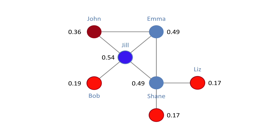In this eigenvector centrality analysis, Jill is again an important player because Jill is very central and also connected to other central people. We see that Emma and Shane are important, but for a different reason — they're important because they are connected to Jill and because they have lots of ties going through them.